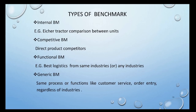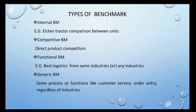Now we discuss the types of benchmarking. The first type is internal benchmarking. For example, Eicher Tractors — a tractor manufacturing unit with many agricultural products — instead of choosing external players in the market, chooses one of its own best-functioning units and uses it as the benchmark. This is what we call internal benchmarking: not depending on external people, but following the methodology of the best-performing unit within your own organization and implementing it in your own unit.